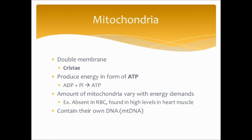Mitochondria have a double membrane; the inner membrane is composed of cristae, or foldings. Mitochondria are the site where a lot of the energy is produced in the cell — generally known as the powerhouse. They produce energy in the form of ATP, or adenosine triphosphate, via phosphorylation — taking adenosine diphosphate and adding a phosphate group to make ATP. The breakdown of that bond is what releases energy.